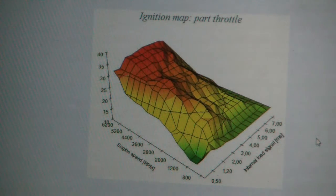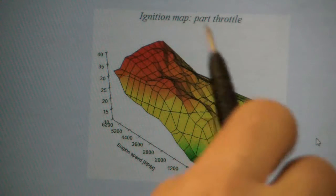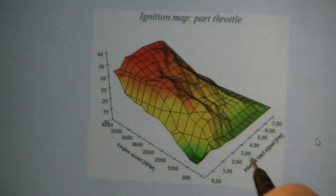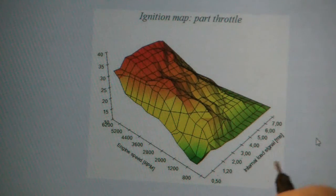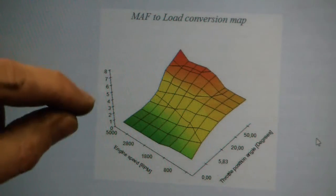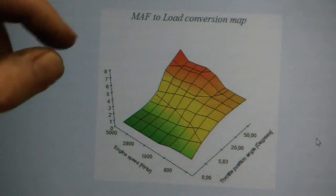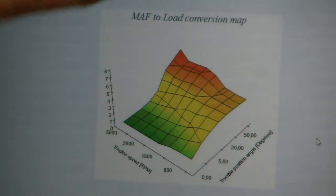And, here, is another map. This does not contain any throttle position sensor, but, it contains the internal load signal in milliseconds. The internal load signal is from the mass air flow sensor, and, if we remember, this mass air flow sensor, load conversion map uses the throttle position sensor. So, your throttle position, basically, the engine expects to get a certain amount of air and certain amount of fuel, and so on, so on.